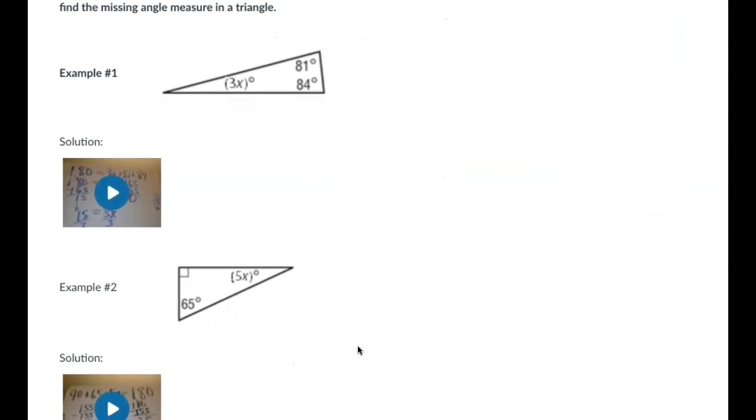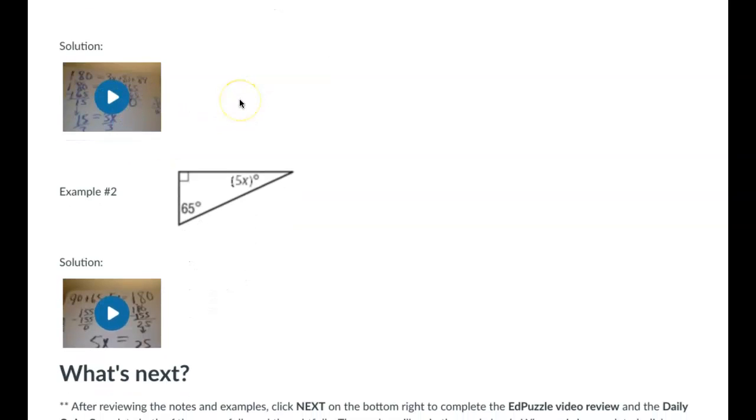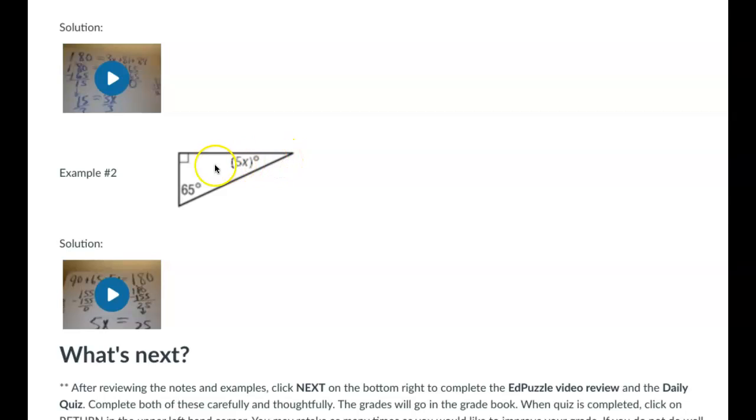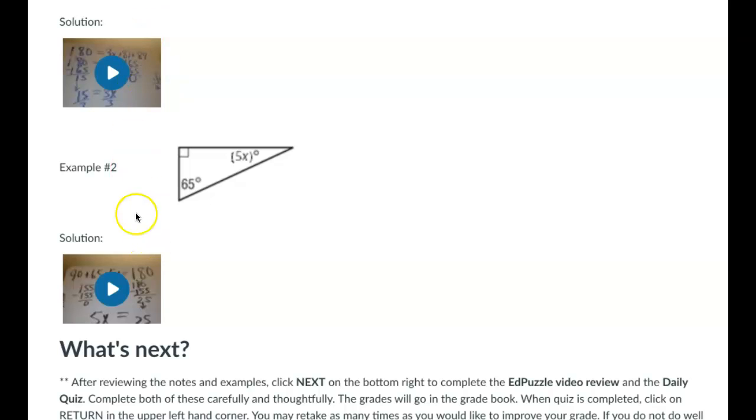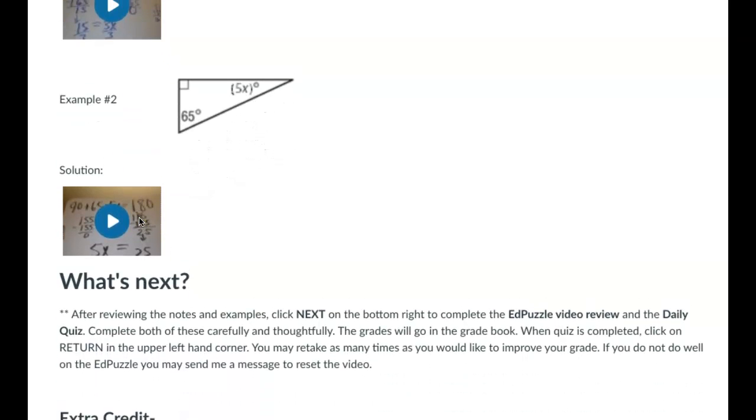So if that's always the case, we can use algebra to find missing amounts. So if this angle is equivalent to 3x, and these two angles are equivalent to 81 and 84 degrees, then you can watch this video to show you how to solve for x. Same thing here. If this angle is 5x, this is 90 degrees, and this is 65 degrees, then you can watch this video here to show you how to solve for how much that x is. So please watch these extra videos as needed to understand what's going on.